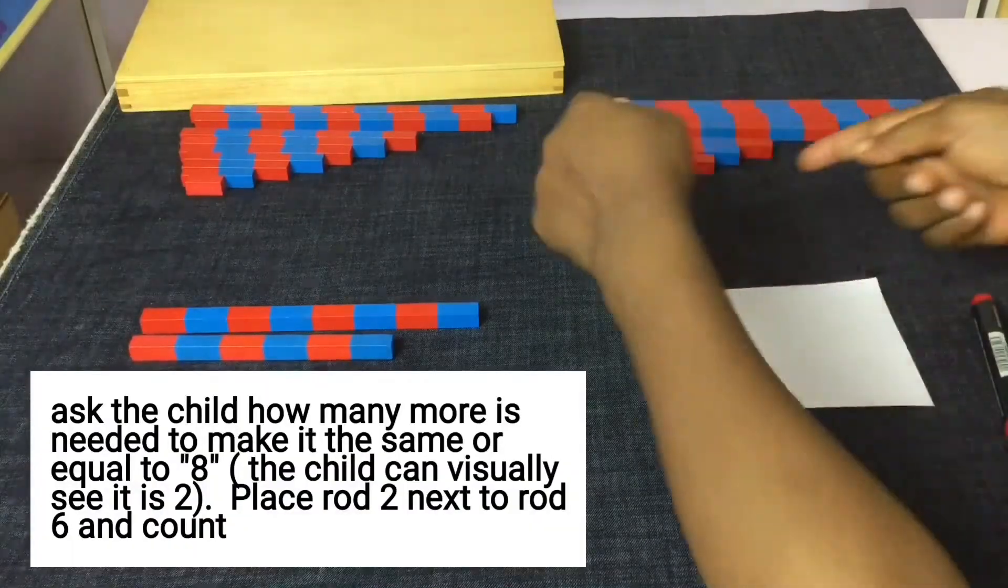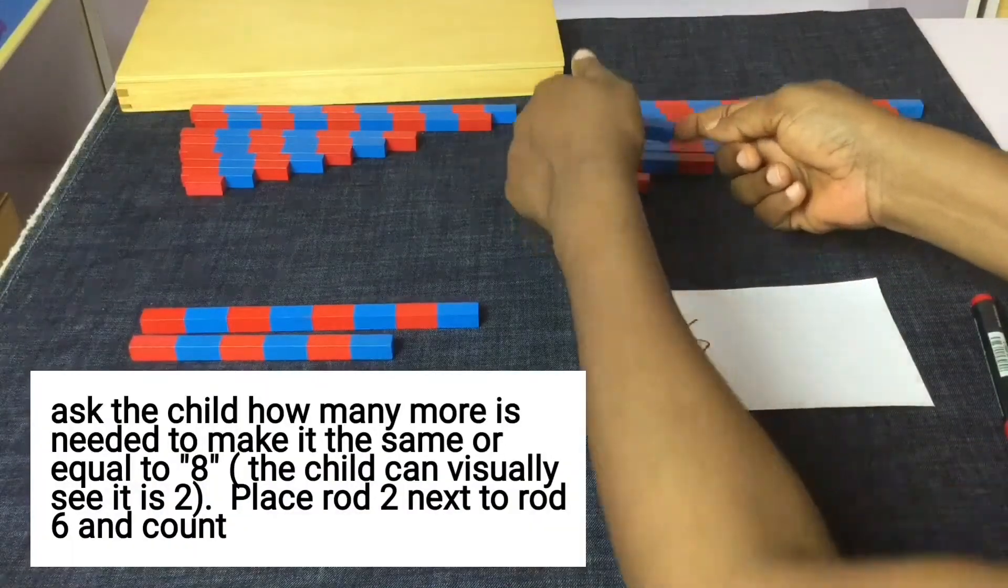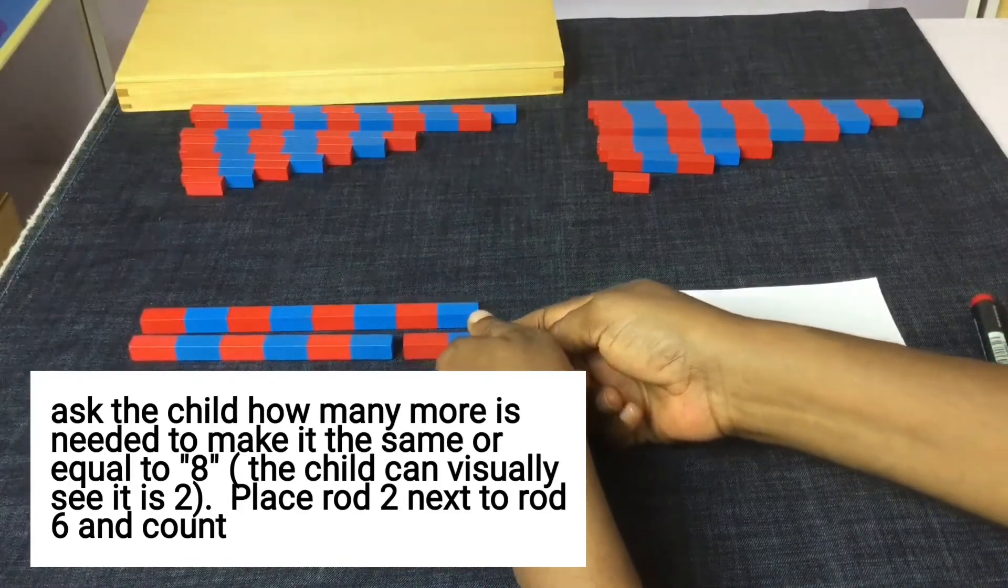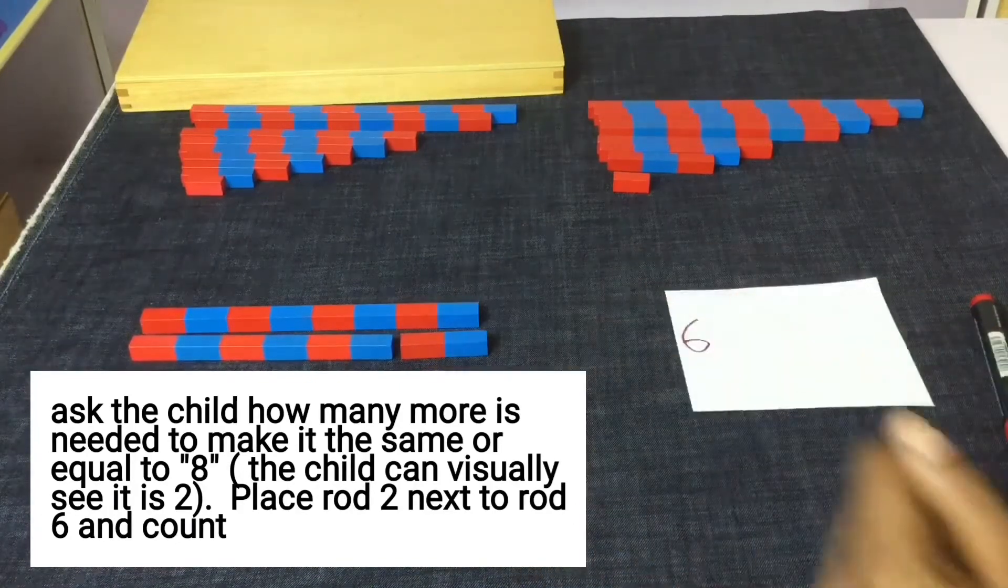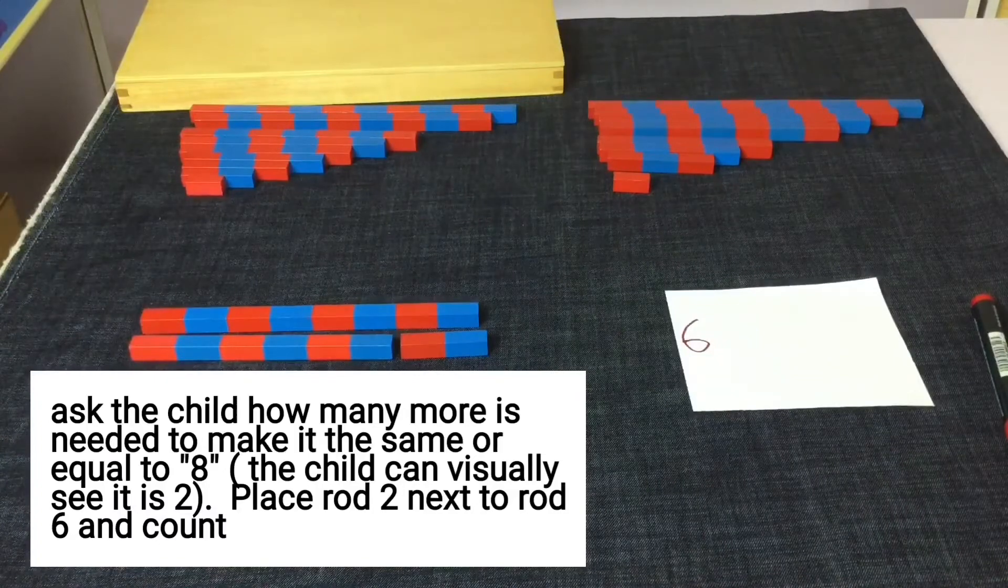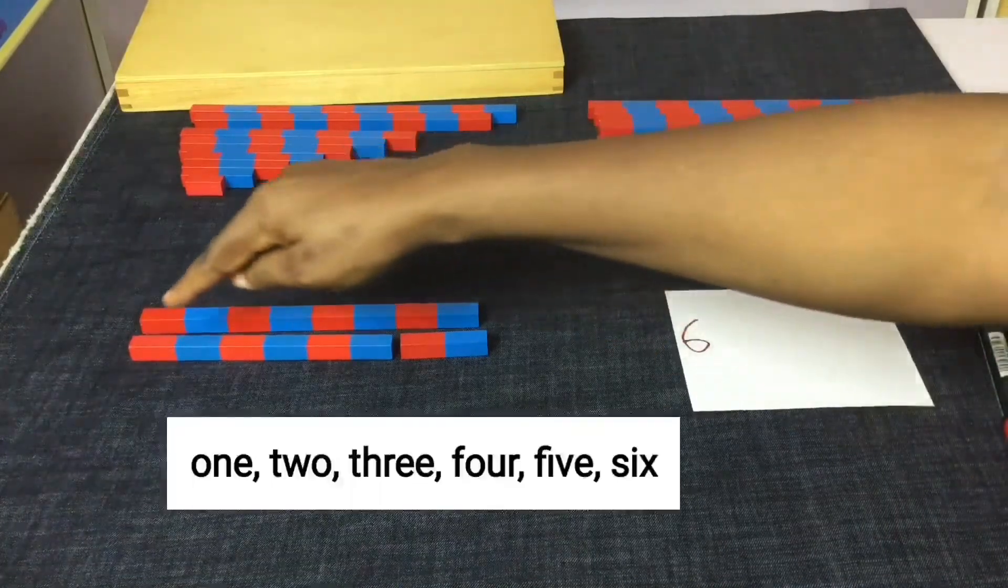Ask the child how many more is needed to make it the same or equal to 8. The child can visually see it is 2. Place rod 2 next to rod 6 and count.